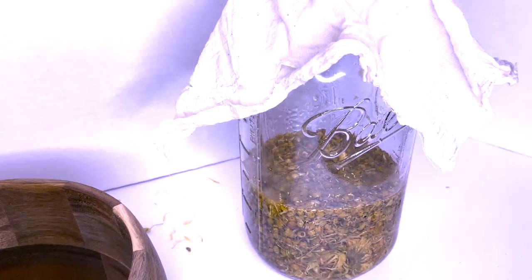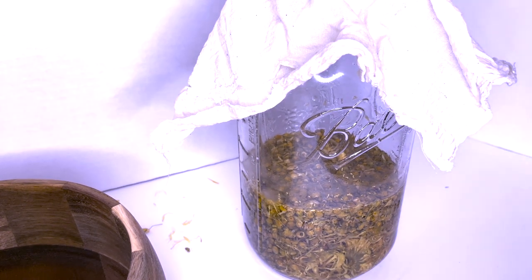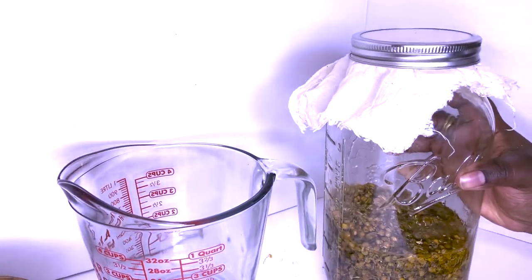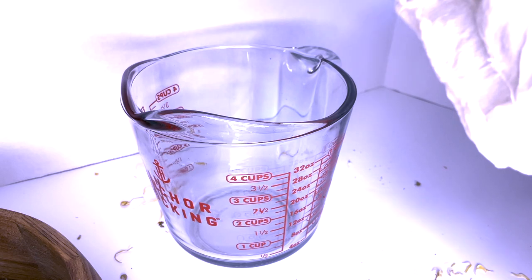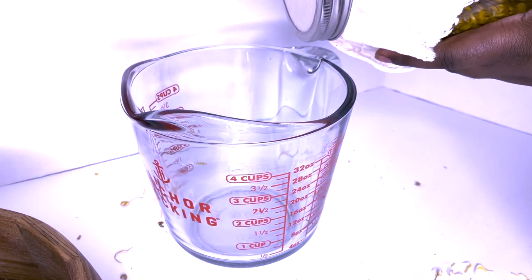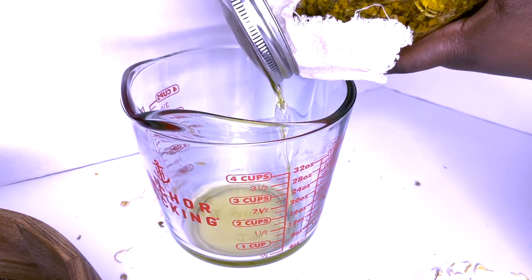I'm taking my cheesecloth and placing it over the wide mouth of the mason jar to help the separation process. We're going to strain the oil from the herb. This is the best way I've been able to extract any type of oil when doing an herbal infusion.